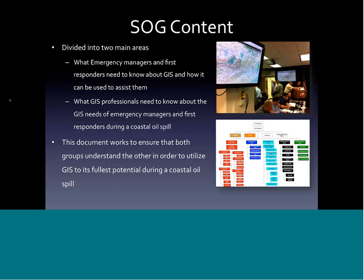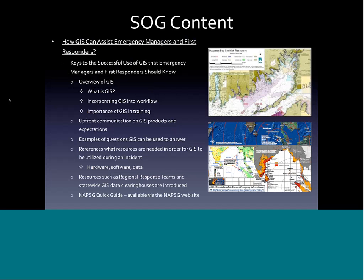I'm going to spend time going through the SOG content — the big points you need to understand, the major headings — so you have a better understanding of the document once you download it. I'll also explain how this document can be used and how it's set up. The core of the document has two main parts: what emergency managers and first responders need to know about GIS and how they can use it during an incident, and what GIS professionals need to know about how GIS can be utilized by emergency managers before, during, and after an oil spill.